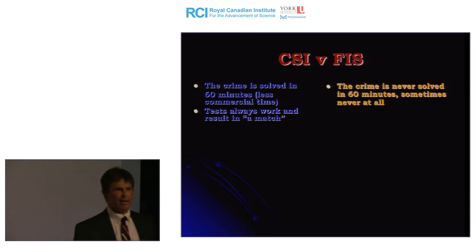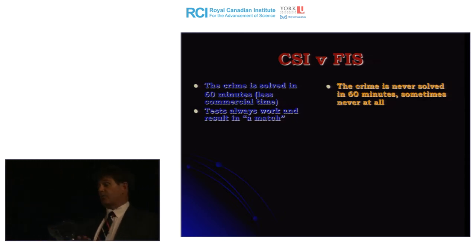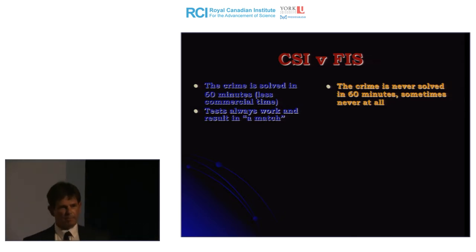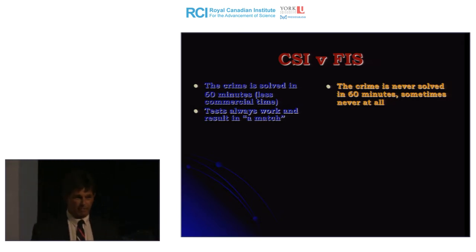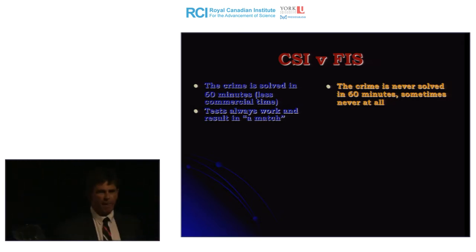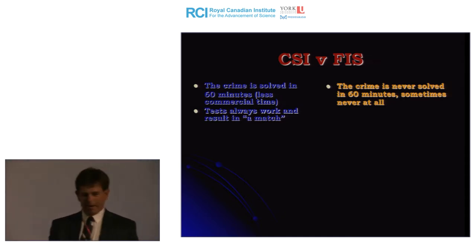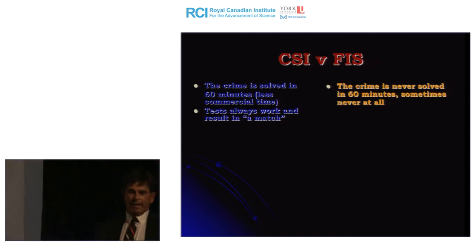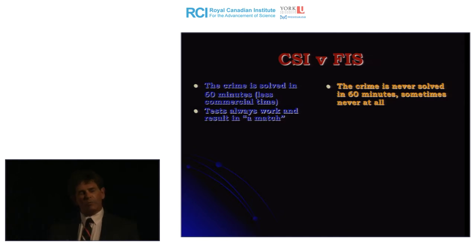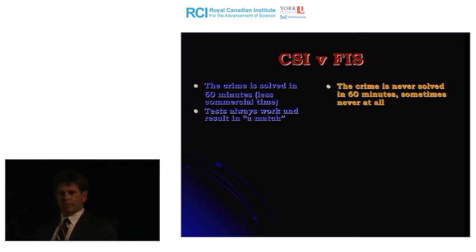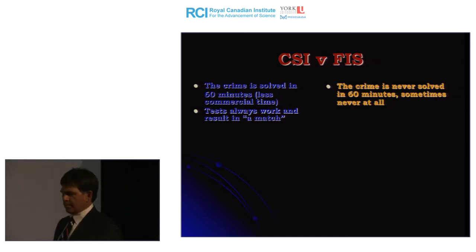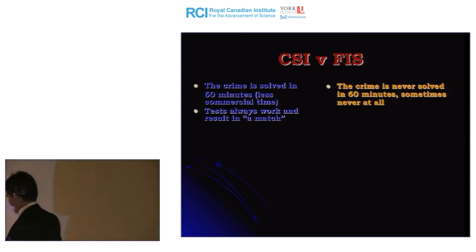Anyone see the CSI episode where Grissom pulls out a jar of Vicks VapoRub and waves it under jail cell bars, and fingerprints magically develop from the vapors? I tried it — nothing happened. The concept is that we do use camphor, an ingredient in Vicks VapoRub, to develop fingerprints on metallic items — particularly galvanized metal. But we don't just use the vapors; we ignite it. I'm going to do a demonstration, time permitting.